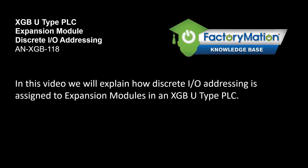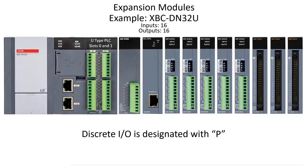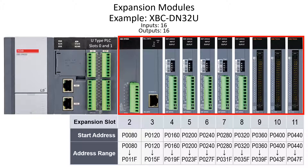In this video we will explain how discrete I/O addressing is assigned to expansion modules in an XGB U-type PLC. In the XGB PLCs, all discrete I/O addressing is designated with the letter P. We will be looking at how the P addressing is assigned to expansion modules and how the discrete I/O is addressed. The LS U-type PLC can be configured with expansion modules for increased I/O and enhanced functionality.